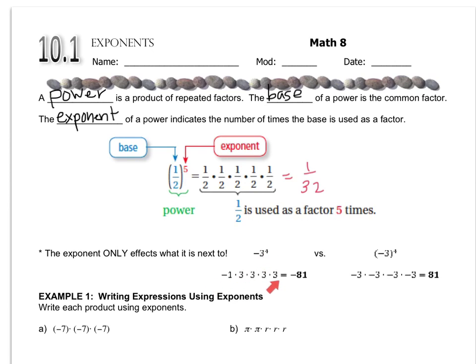So you'd have to do 3 to the 4th first and then multiply it by negative 1. This, in parentheses, is telling you that negative 3 is the base, whereas here only positive 3 is the base. So it changes the way that you evaluate the answer. So I would like you to get in the habit of using parentheses around negative bases because it does matter. The parentheses do change the value.